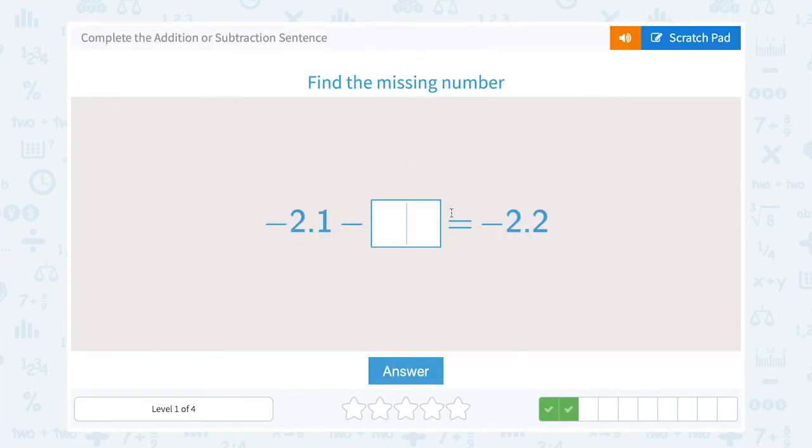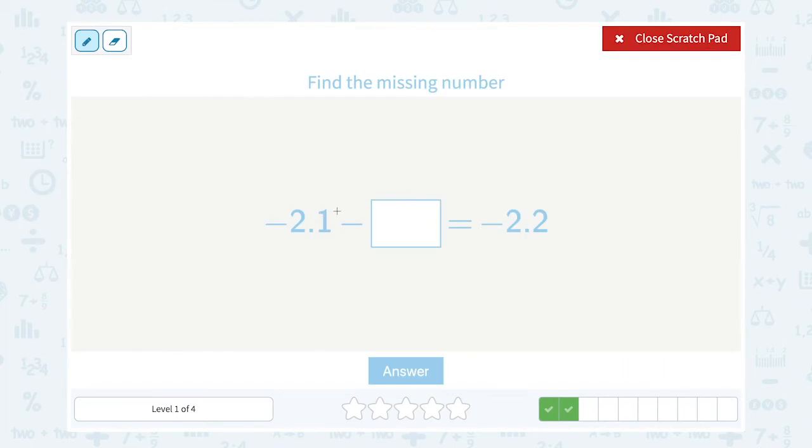Negative 2.1 minus some missing number is equal to negative 2.2. Now, in this case, notice the tenths place got 1 smaller. So I must be subtracting just 1 in the tenths place. Negative 2.1 minus another tenth would give me negative 2.2.